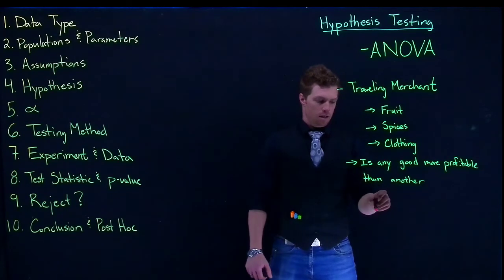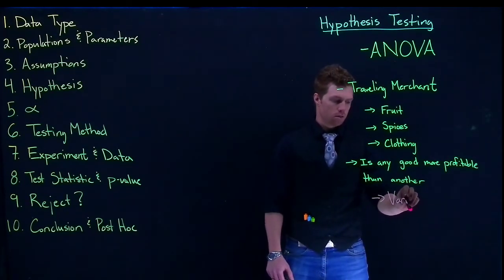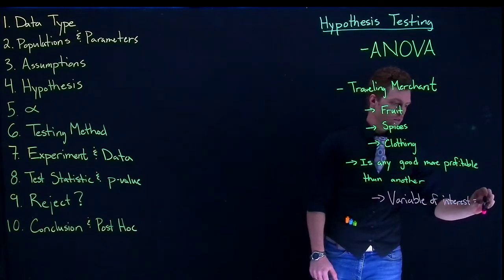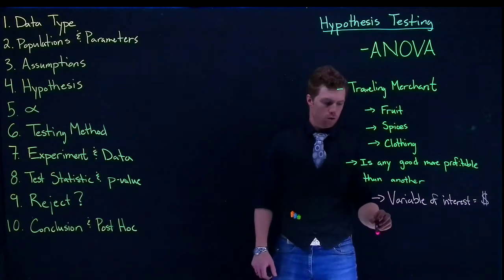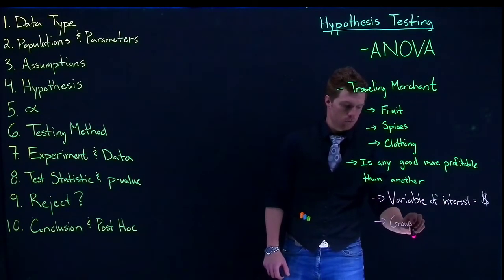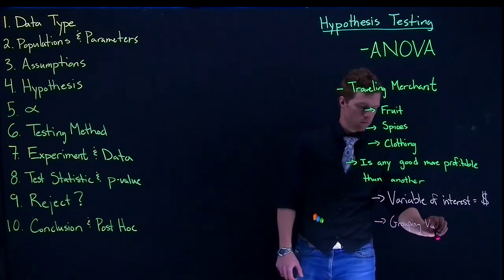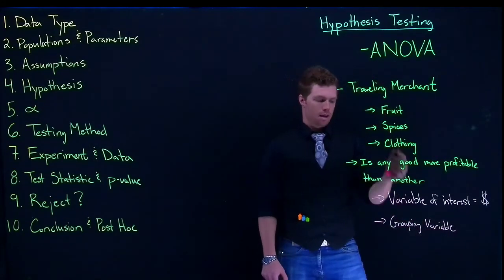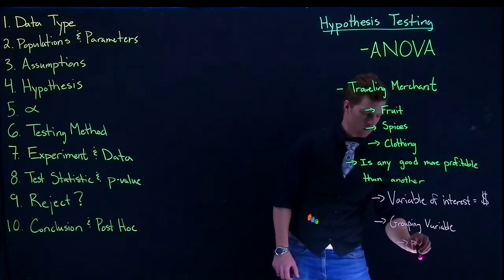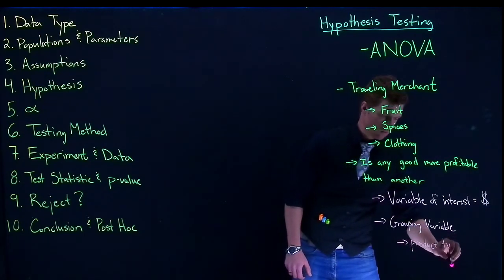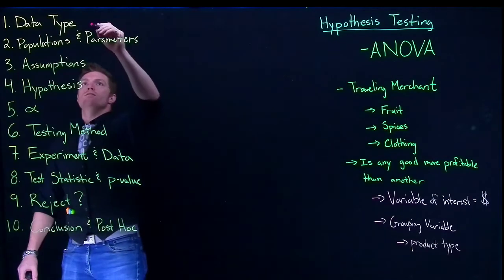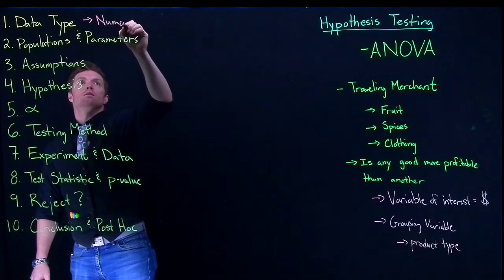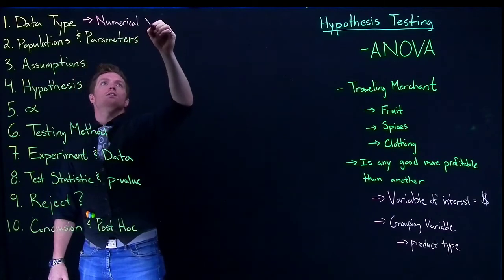So what we're really interested in: our variable of interest is money, and then we've got our grouping variable, which is product type. The data type that we have is numerical, and it's grouped, so we can do this kind of like bi-categorical.